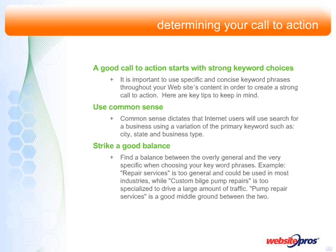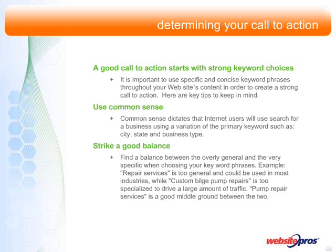Here are key tips to keep in mind. Use common sense — if you're designing a Mexican restaurant website, use 'Mexican restaurant' as part of your primary keyword. Internet users will search using a variation of the primary keyword, such as city, state, and Mexican restaurant. The main focus of your business should always be the primary keyword. Strike a good balance — avoid primary keywords that garner too many or not enough results. A good balance could contain 'Mexican restaurant,' 'Mexican food,' and 'margaritas,' which could be replaced with other dishes, catering services, or live entertainment to help draw in the right visitors.